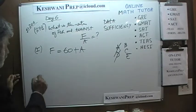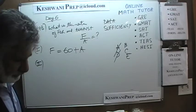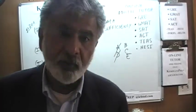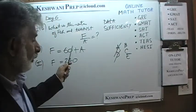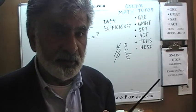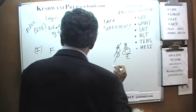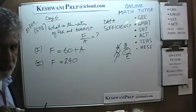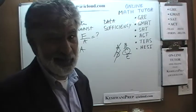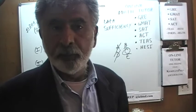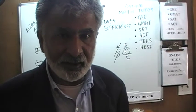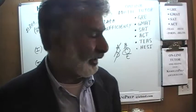The answer has to be B, C, or E. The second statement tells us there were 240 people who voted in favor of the resolution. Now we have two equations and two unknowns — we can figure it out. We don't actually have to solve it; our job is simply to tell them whether we have sufficient data. And we do. The answer is C — if you put the two statements together, of course we can figure it out.